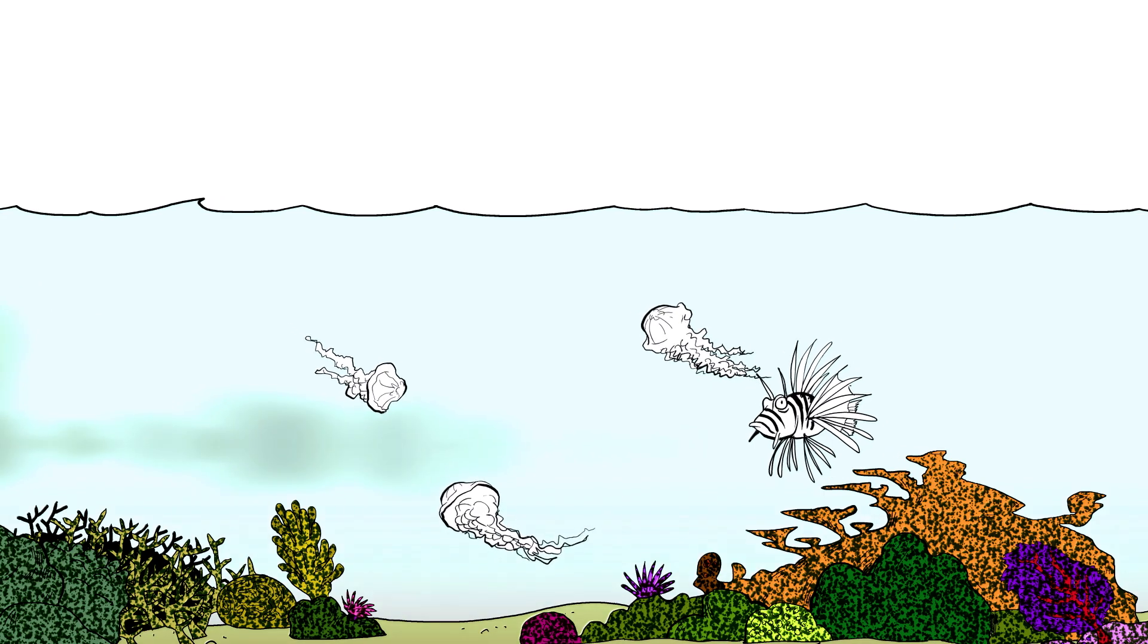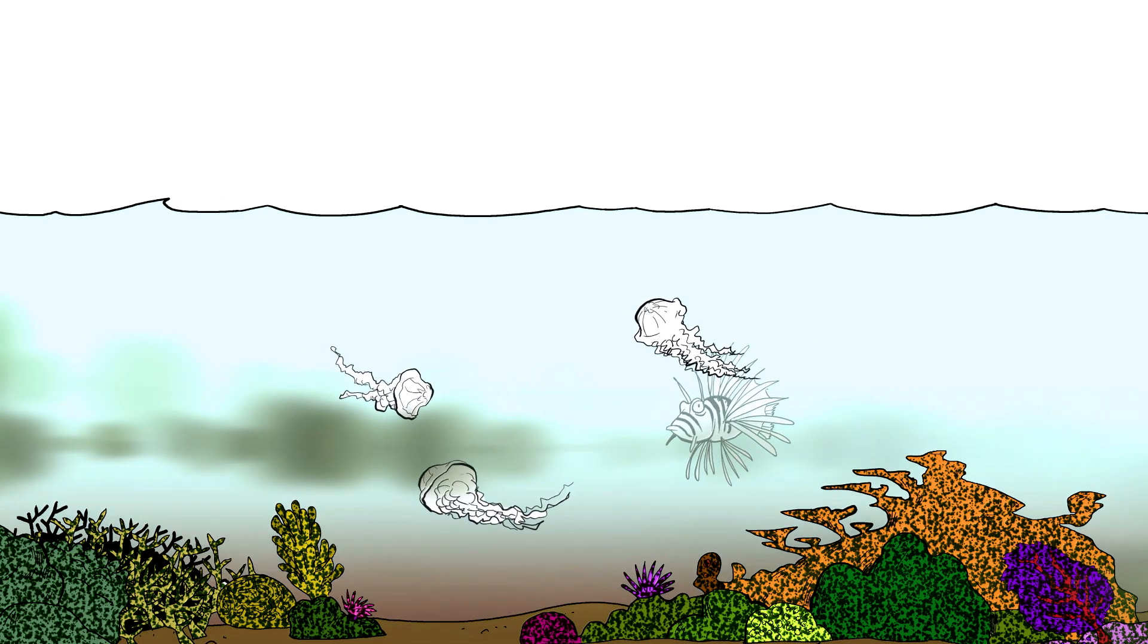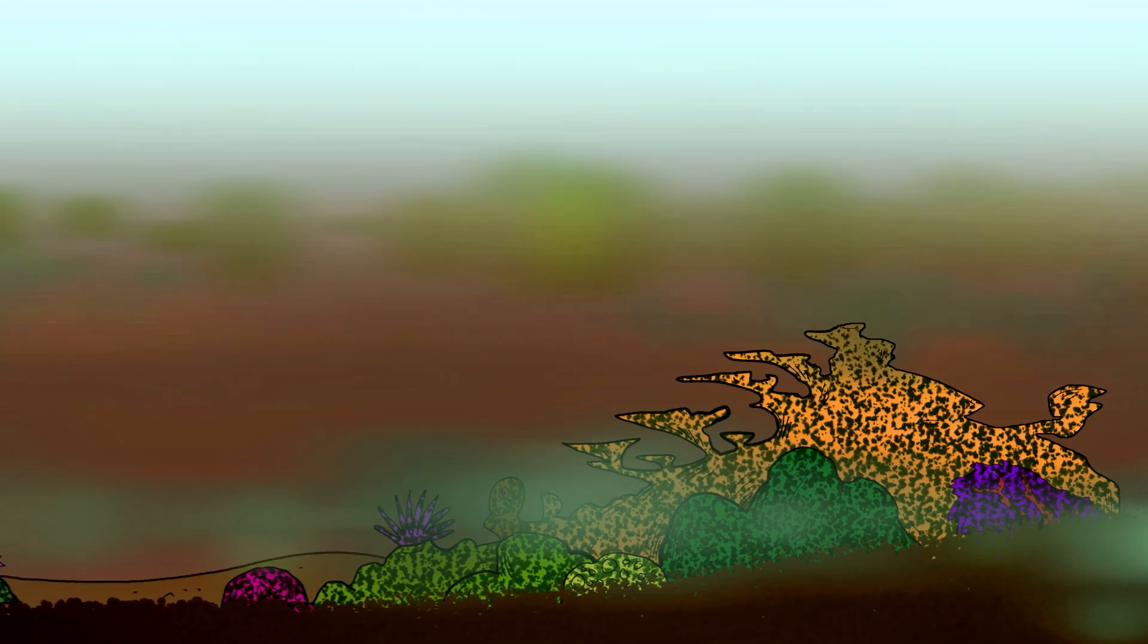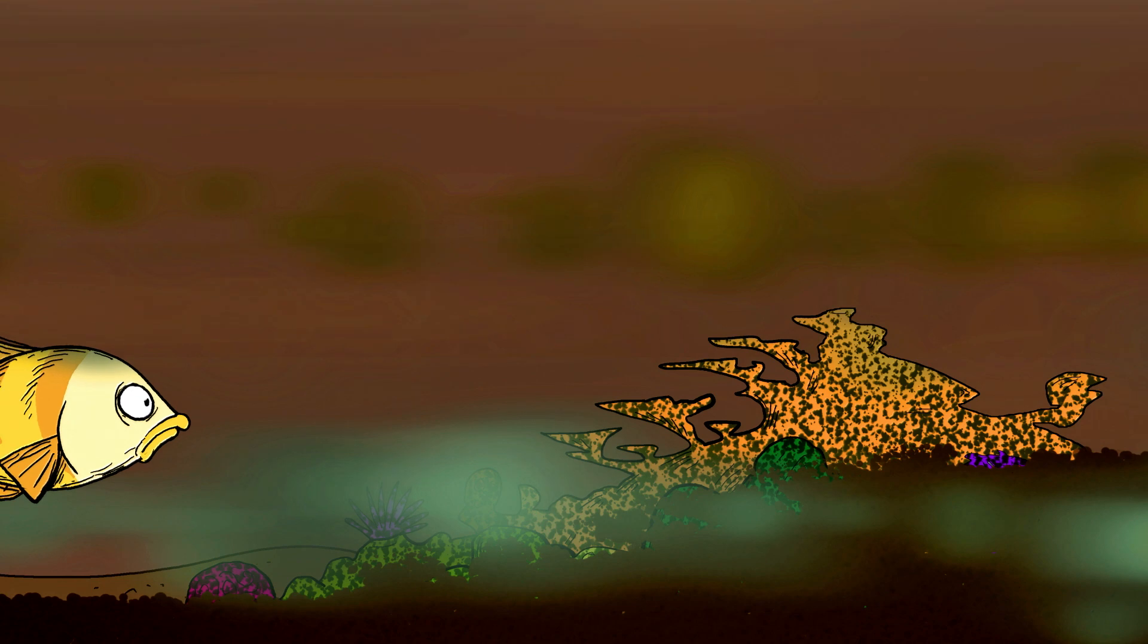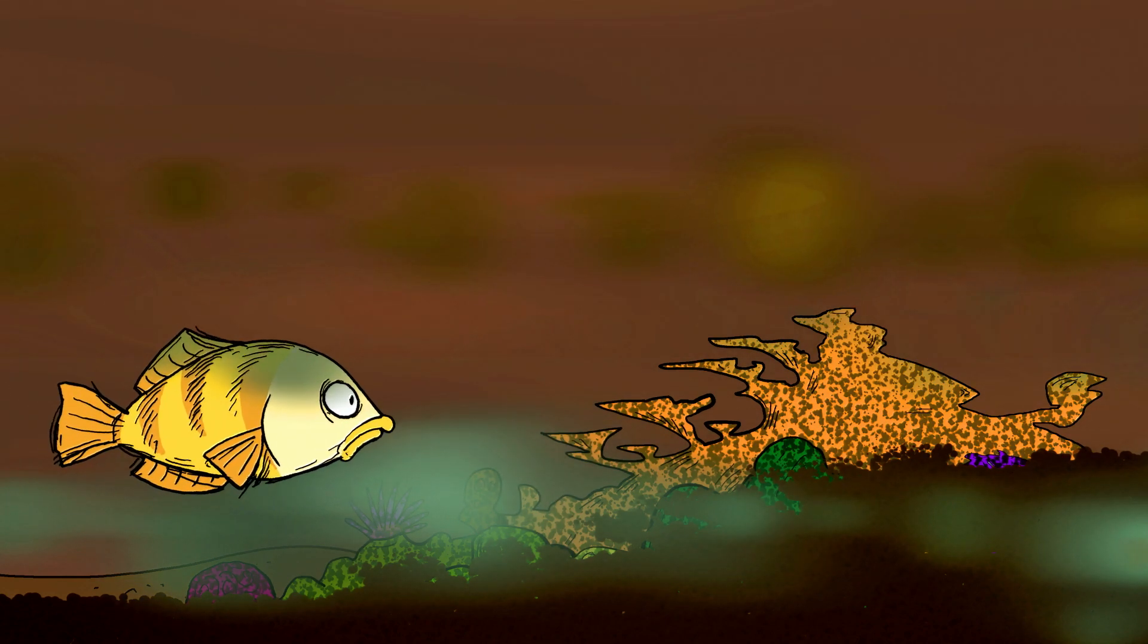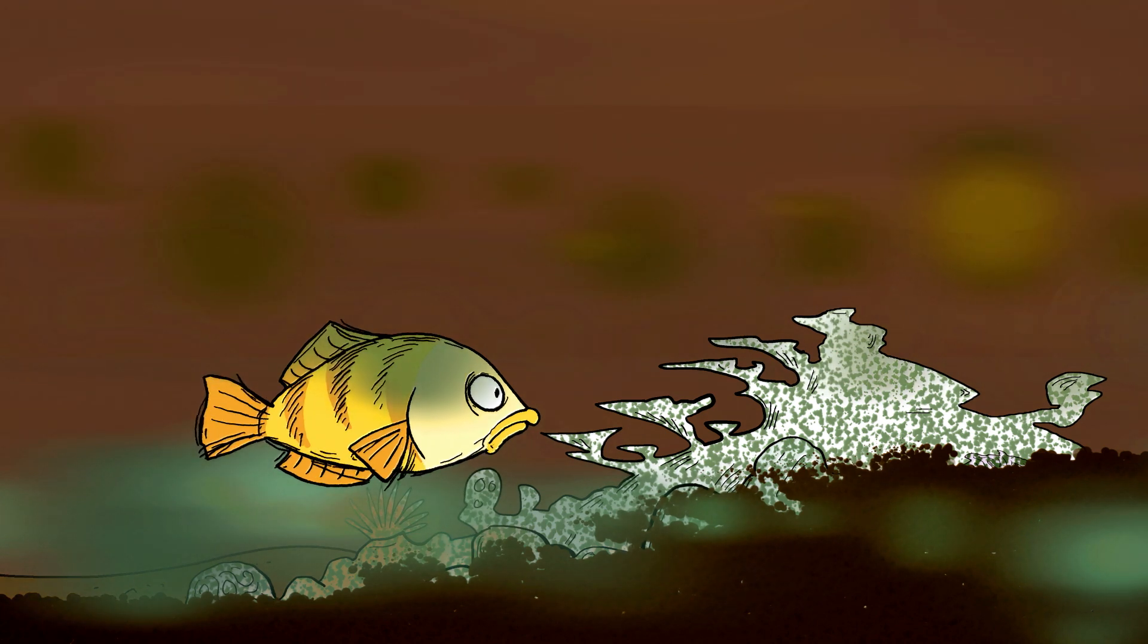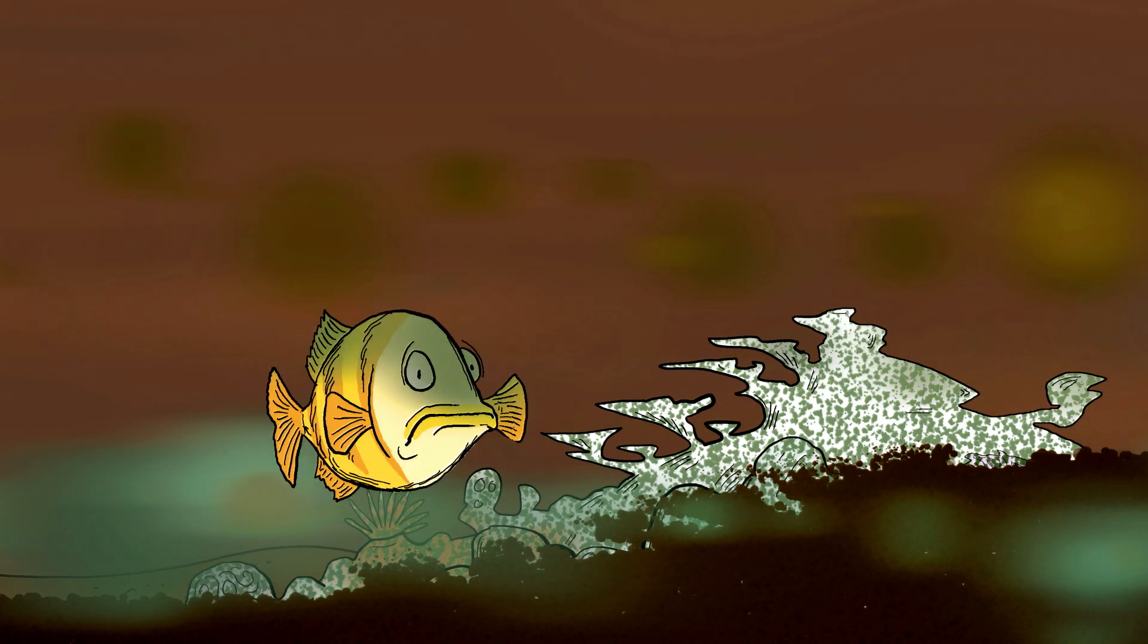And we're harming reefs in other ways too. Runoff from farms, industry, and coastal construction can bury coral reefs with sediment and pollution, create algae blooms and kill corals. Our warming seas are causing coral bleaching, a process where polyps lose their colorful algae and turn pale. This further weakens the reefs.